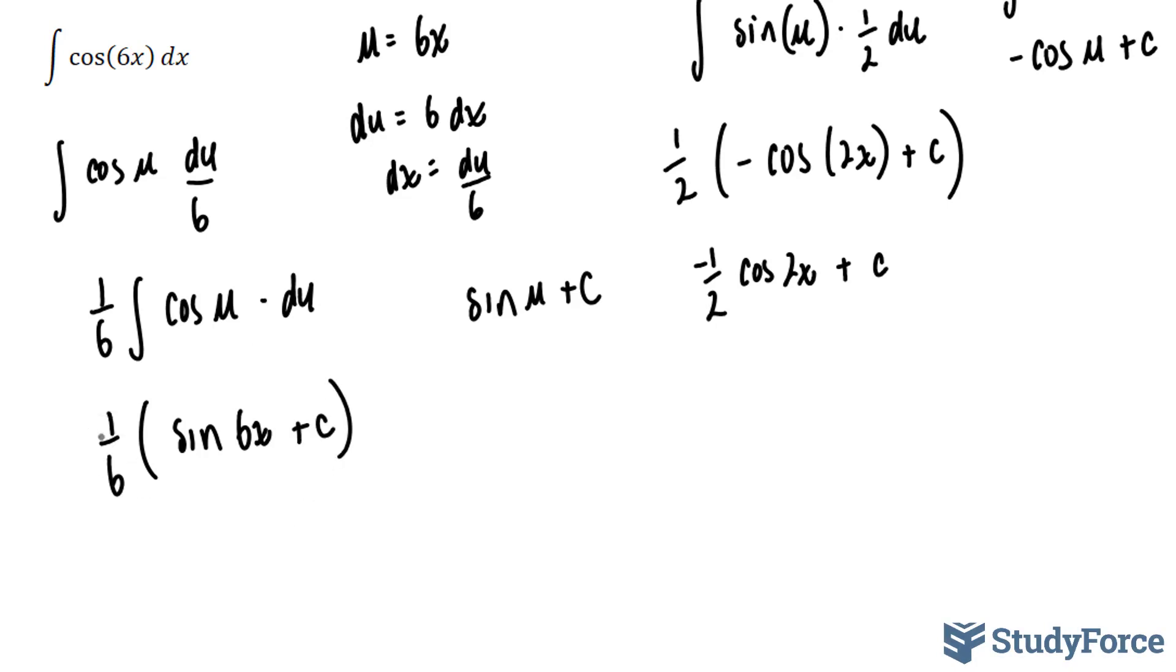Multiplying this 1 over 6 into the bracket, I end up with 1 over 6 sine 6x plus c.